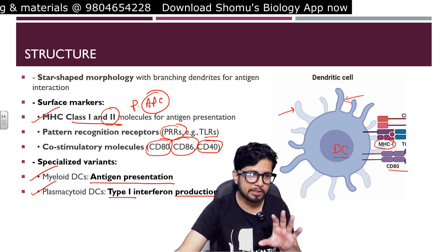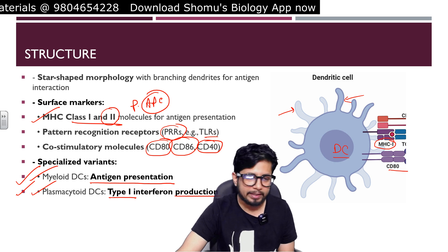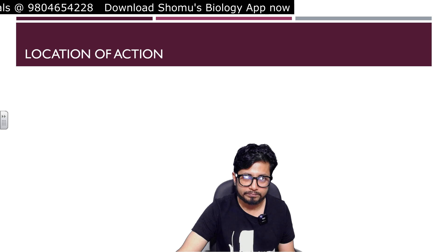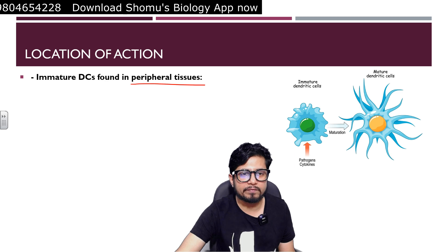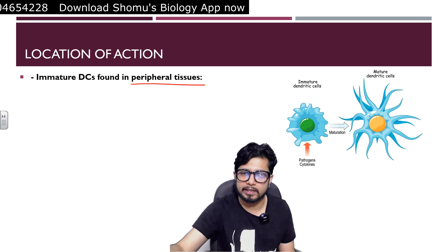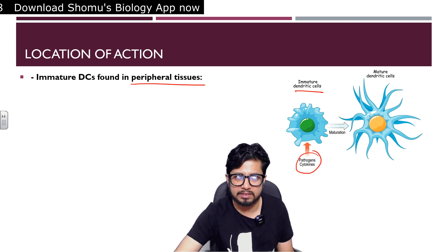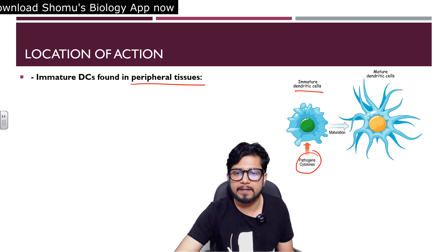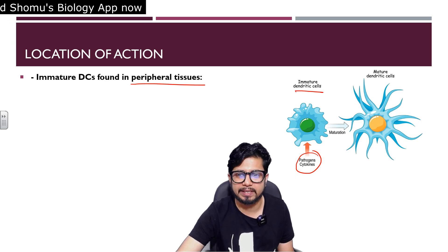There are specialized variants: myeloid DCs perform antigen presentation, while plasmacytoid DCs produce type 1 interferons. So myeloid DCs engulf the antigen, degrade it, and showcase it to the rest of the immune system — that is antigen presentation — whereas plasmacytoid DCs produce type 1 interferons. That is the key difference between the two.